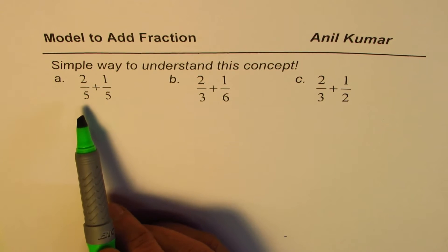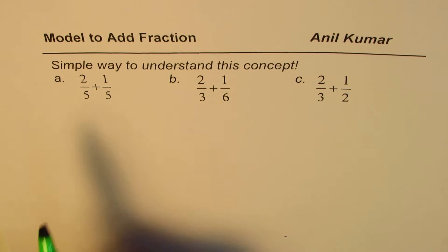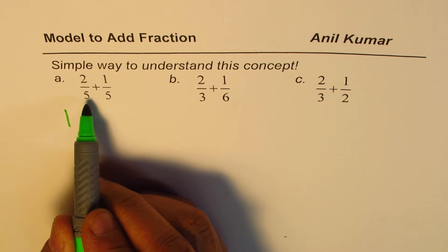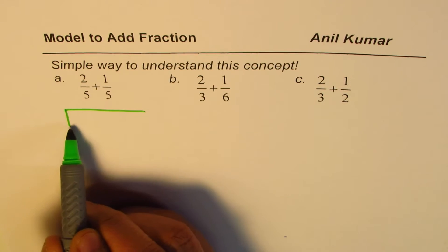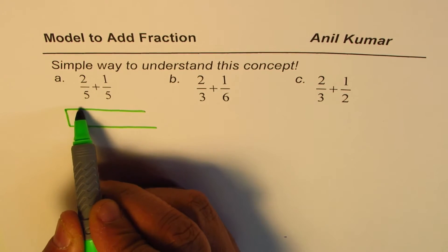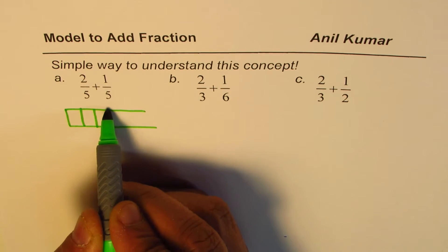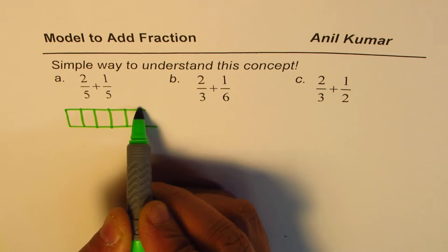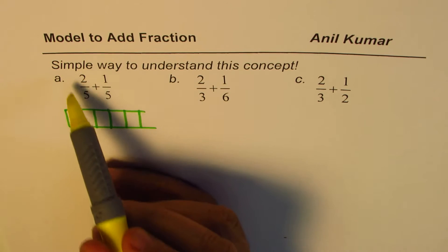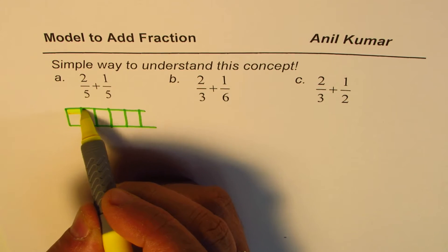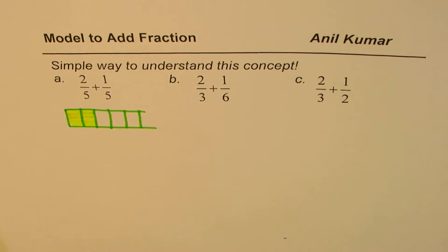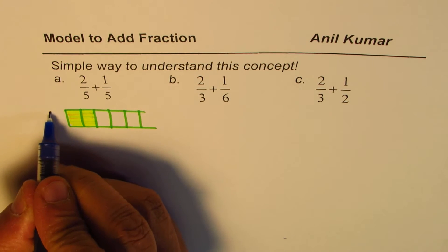The first one here is 2 over 5 plus 1 over 5. Now let us make a rectangle and then we will divide this rectangle into 5 equal parts. Just draw a rectangle and divide into 5 parts: 1, 2, 3, 4 and 5. Now when we say 2 over 5 that means we need to select 2 out of these 5. We have selected 2 out of 5.